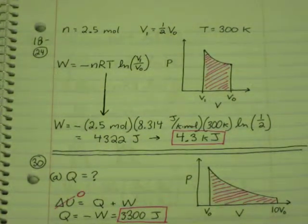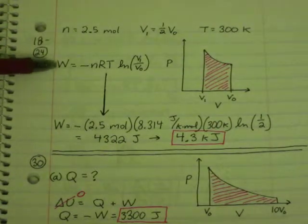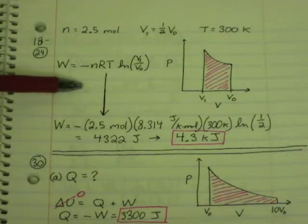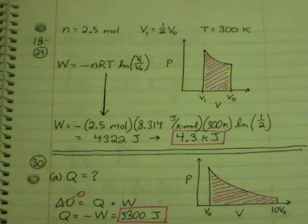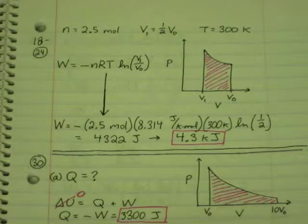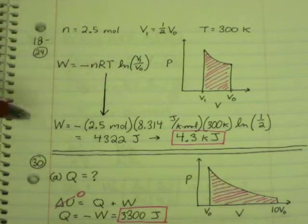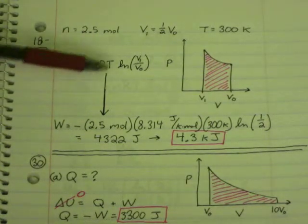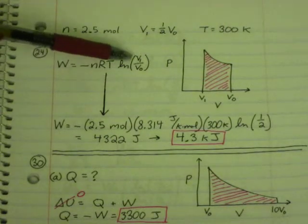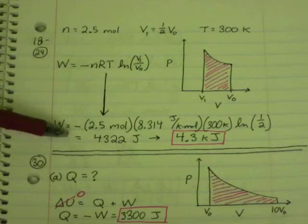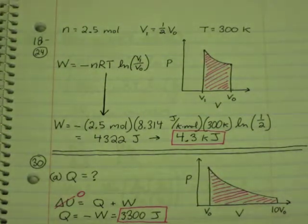Number 24, compressing a gas, 2.5 moles to half its original volume, isothermally. So we use this equation, W equals negative nRT times the natural log of V1 over V0. I've drawn for these problems a PV diagram. It helps, sometimes it helps, helps me to visualize anyway, when I see the PV diagram. It helps to remind me of what equations to use and what concepts I'm using. So W equals negative n, 2.5 moles. There's your r. There's your T, 300 kelvins. There's natural log of V1 over V0, which is 1.5V0 over V0, so it just becomes 1.5. And I get 4,300 joules, or 4.3 kilojoules.